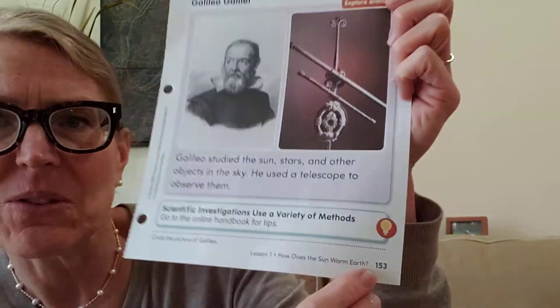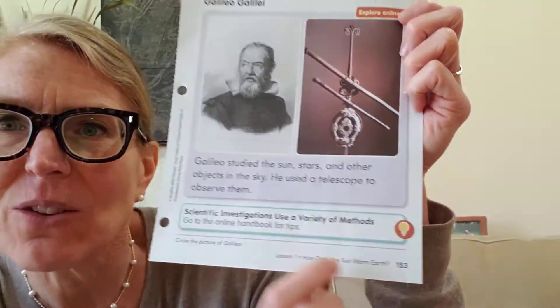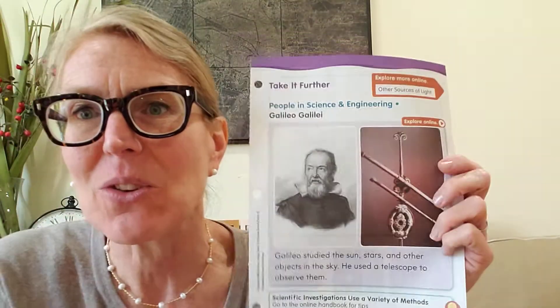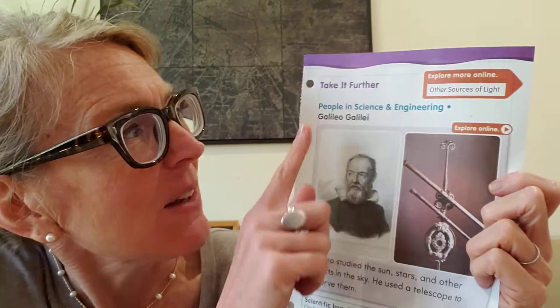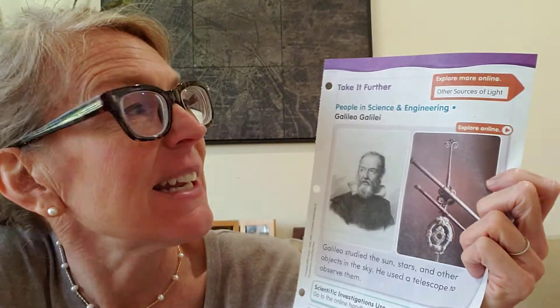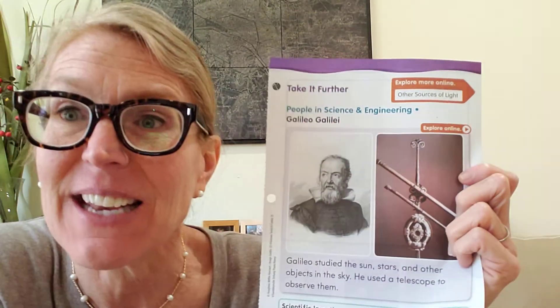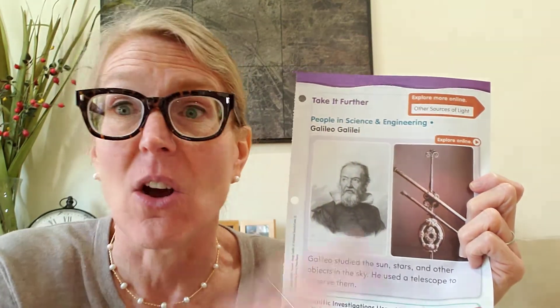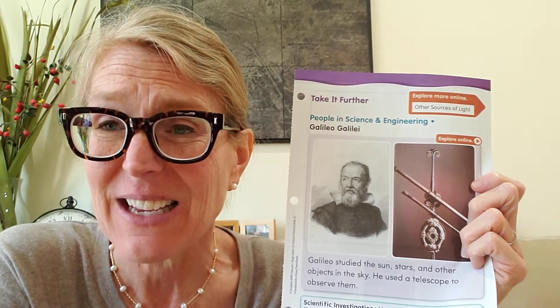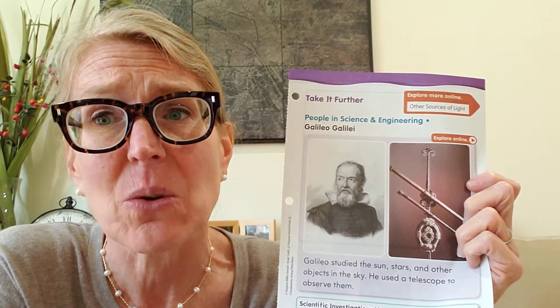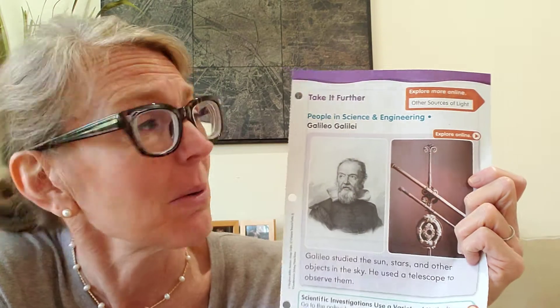If you open up your science workbooks to page 153, you'll see this page right here. It's people in science and engineering. Galileo was an astronomer, and that's someone who studies the sky and all the objects up in the sky. So he's a scientist, but he's also called an astronomer.